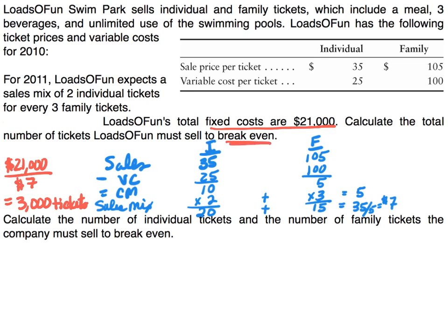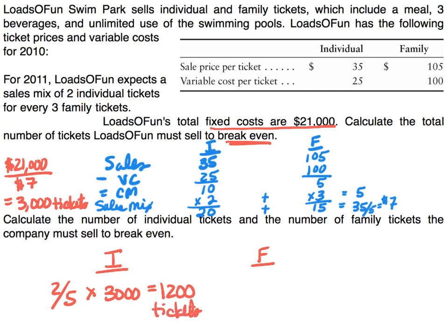Now let's break that apart into individual and family tickets. Remember our sales mix ratio: for every two individual tickets, we sell three family. There are five tickets in our pod, two of which are individual. So two-fifths of 3,000 gives us 1,200 individual tickets. For family, 3,000 minus 1,200 equals 1,800 — or three-fifths of 3,000 — gives us 1,800 family tickets. So 1,200 individual plus 1,800 family equals the 3,000 tickets needed to break even.